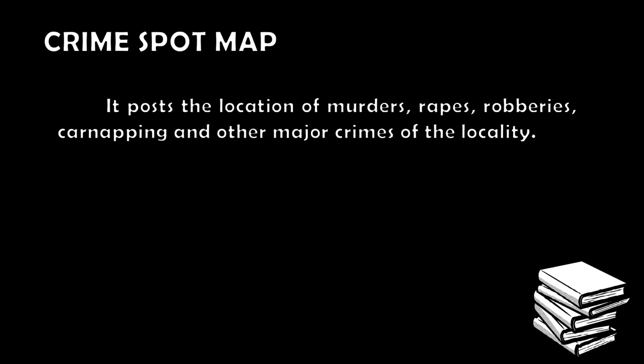Let's go to Crime Spot Map. The Crime Spot Map posts the location of murders, rapes, robberies, car napping, and other major crimes of the locality. This is Crime Mapping where it is indicated which specific offense is prevalent in a specific location. For example, in the City of Manila, on a map of the city, it can be indicated that in Tondo, murder and rape are prevalent, and in Recto, robbery is prevalent. Through the Crime Spot Map, we can immediately identify the high-crime locations and the most commonly violated laws in a specific area.